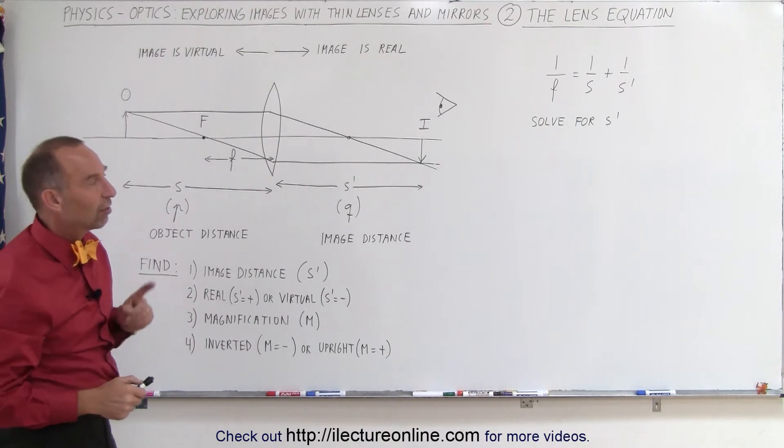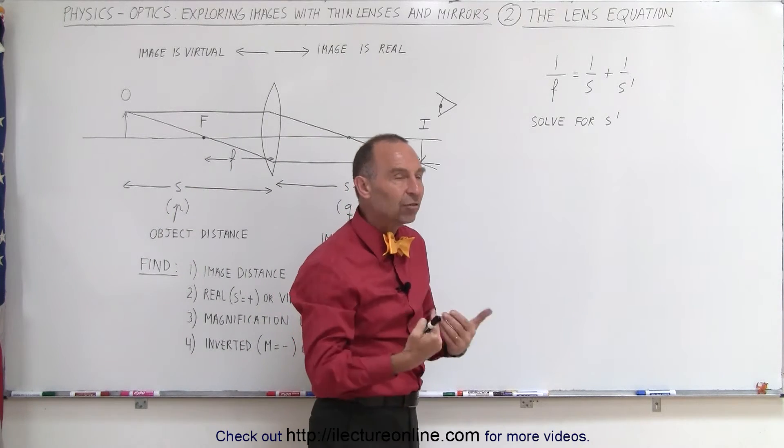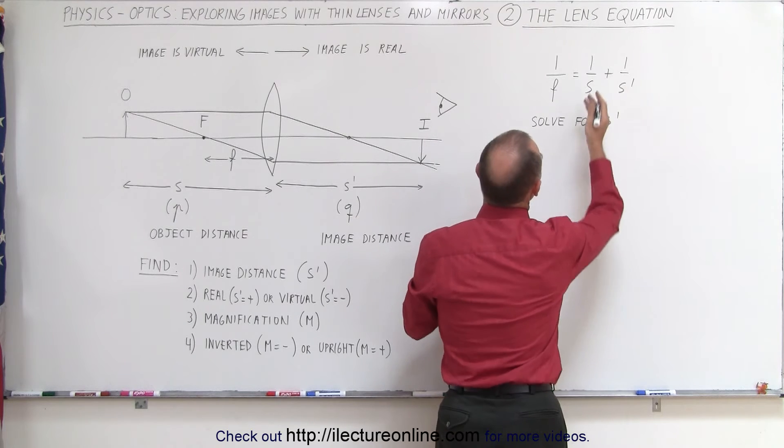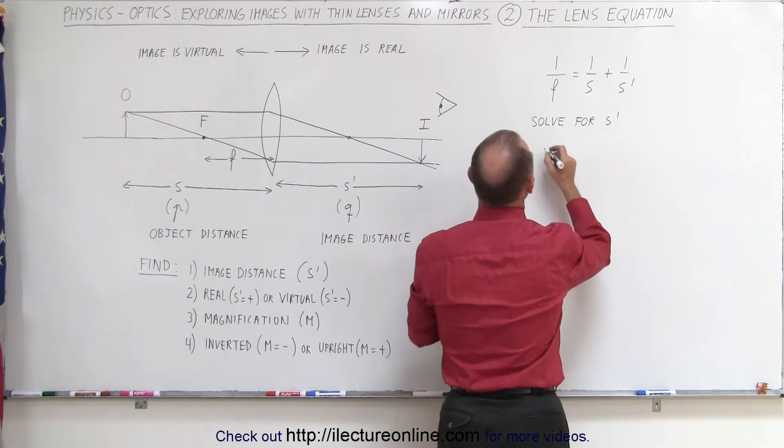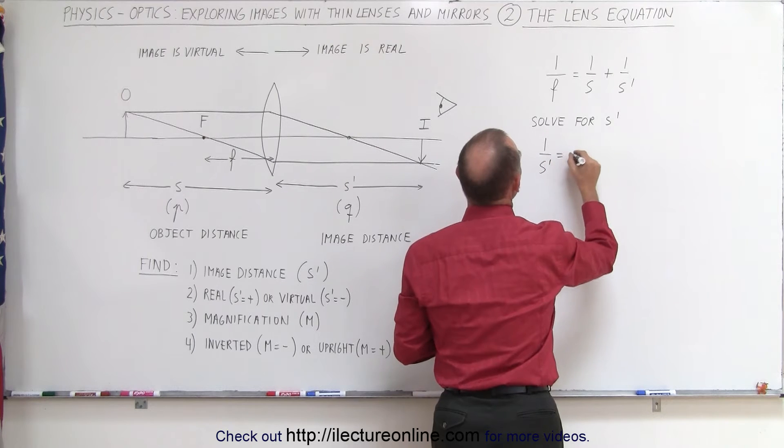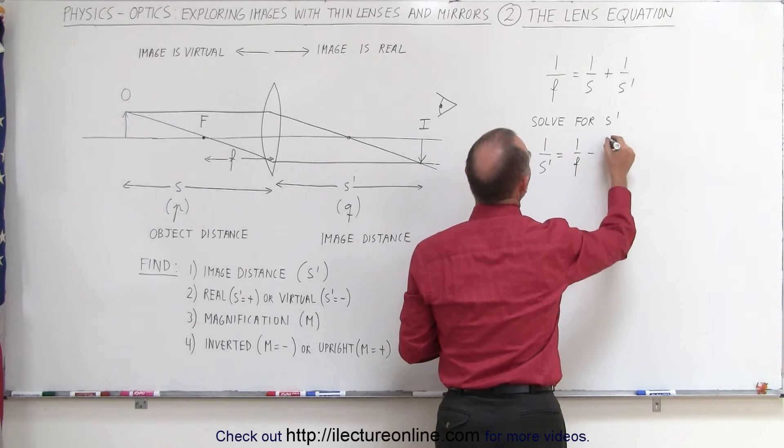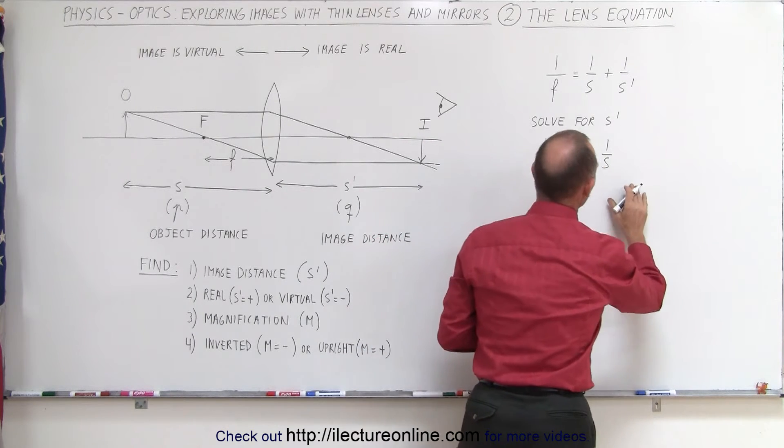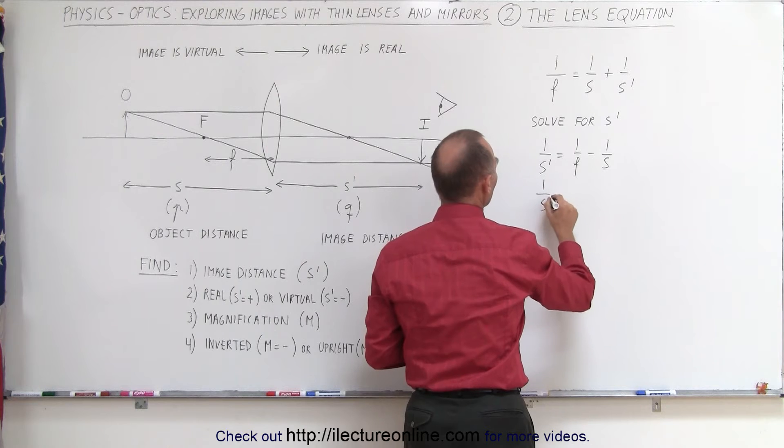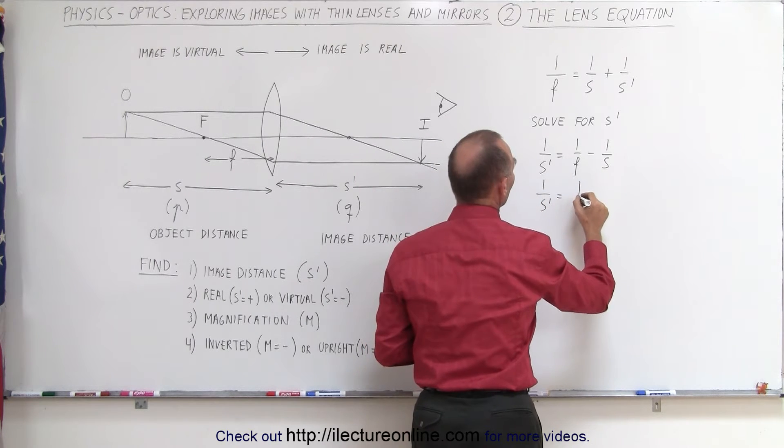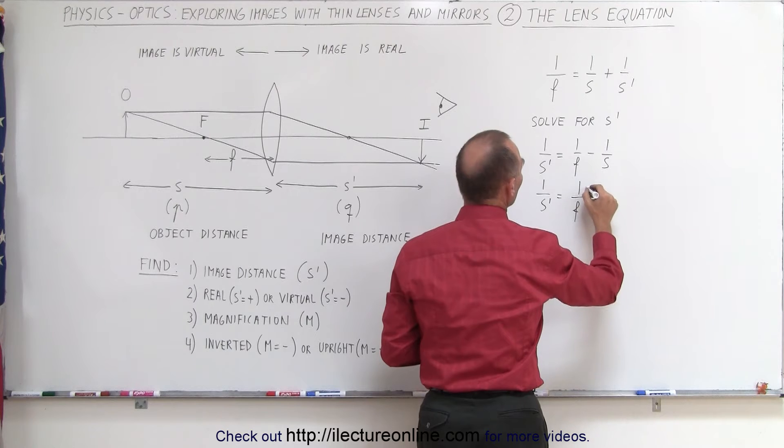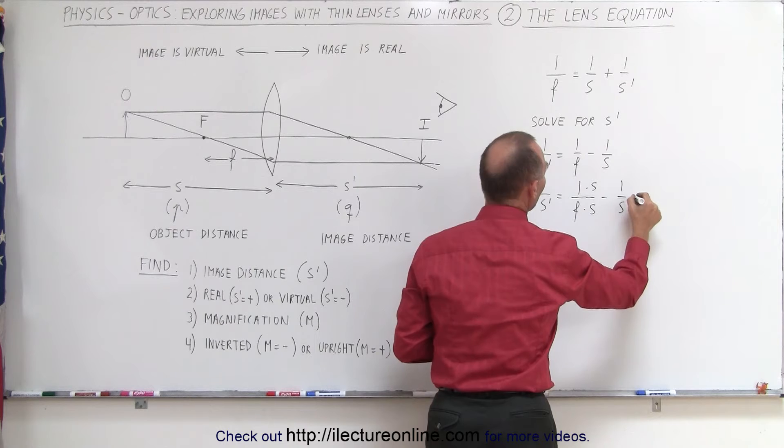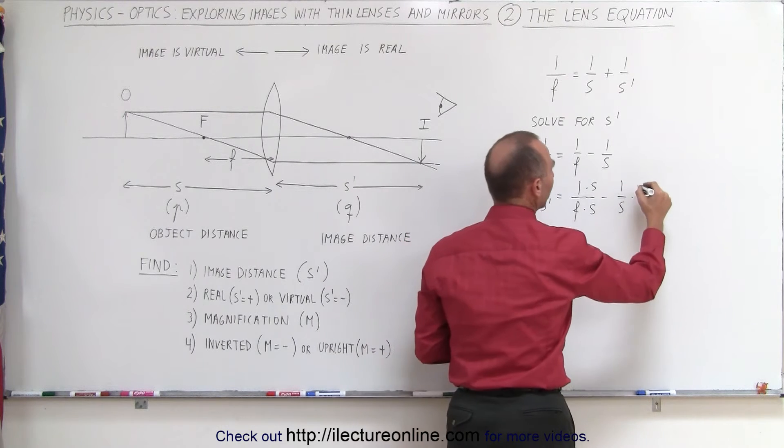So let's take that equation and solve that equation for S prime, because then it makes it easier to work with it, so we can easily find the image distance. So first, what we do is we'll move the 1 over S to the other side, turn the equation around, so we'll get 1 over S prime equals 1 over F minus 1 over S. Now we'll find the common denominator, which is F times S. So we can write 1 over S prime is equal to 1 over F. We're going to multiply both the numerator and the denominator by S minus 1 over S and we're going to multiply both the numerator and the denominator by F.